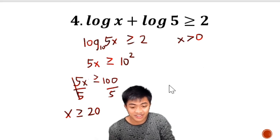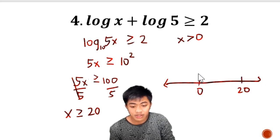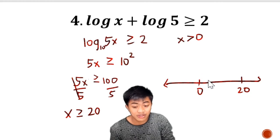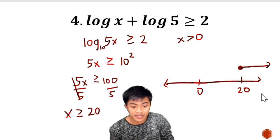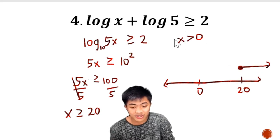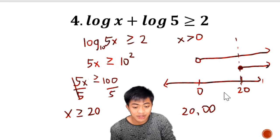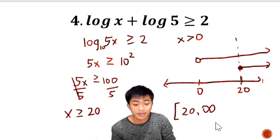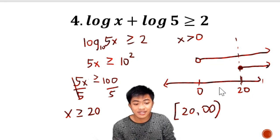Since 5 is always greater than 0, we only need x greater than 0. We draw the number line with 0 and 20 marked. For x greater than or equal to 20: 20 is included, closed circle, shade to the right. For x greater than 0: open circle at 0, shade to the right. Their intersection is from 20 to positive infinity. Since 20 is included, we use a square bracket, giving [20, +∞).